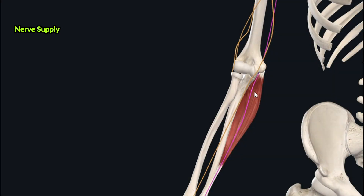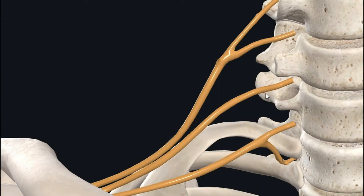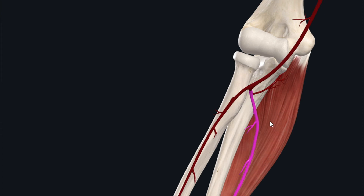The flexor carpi ulnaris muscle is supplied by the ulnar nerve. The ulnar nerve originates from the medial cord of the brachial plexus, with nerve fibers derived from the anterior rami of the seventh and eighth cervical and first thoracic spinal nerve roots. After arising from the medial cord, the ulnar nerve passes through the ulnar groove posterior to the medial epicondyle of the humerus, then passes between the two heads of the flexor carpi ulnaris to run anteriorly to this muscle, where it gives off branches to it.